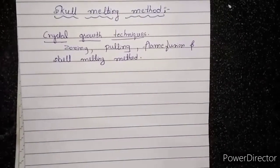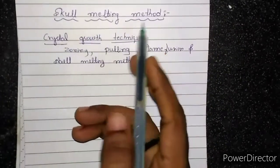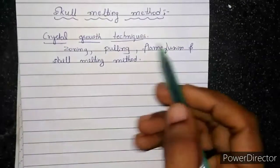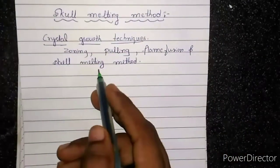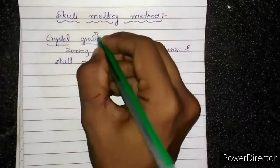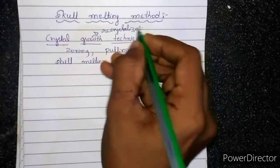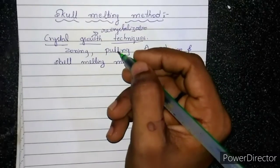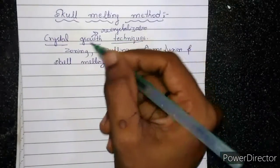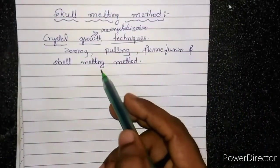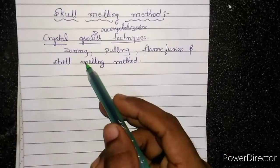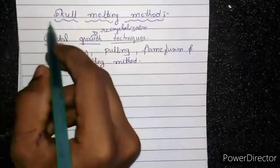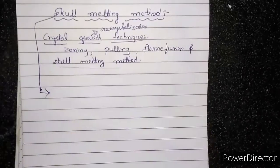Hello students, welcome to my channel. In this video we will study the skull melting method. The skull melting method is one of the crystal growth techniques. There are mainly four different types: the zoning technique, pulling technique, flame fusion method, and the skull melting method. In this class we will be focusing on the skull melting method; the zoning, pulling, and flame fusion methods we will see in later classes.